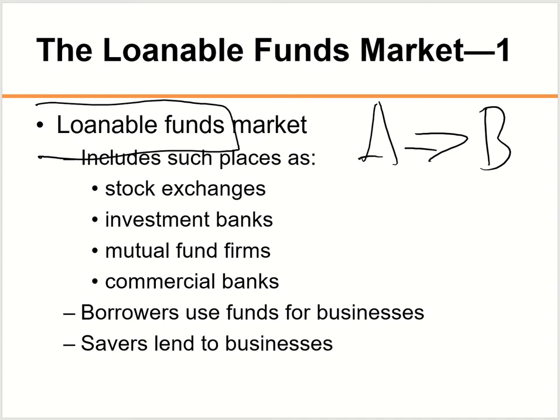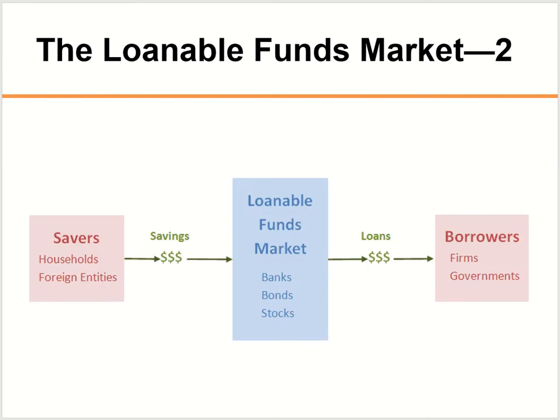So savers will save money and then give it to businesses, and borrowers will use the money to run the business — those are the two sides of the equation. For this chapter, we'll assume savers are people in households and foreign entities such as foreign investors. When they save money, they give it to the loanable fund market in the form of banks, bonds, or stocks.